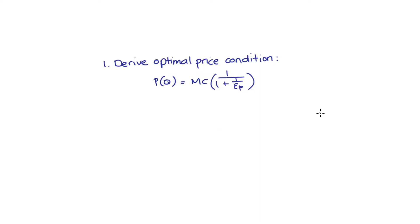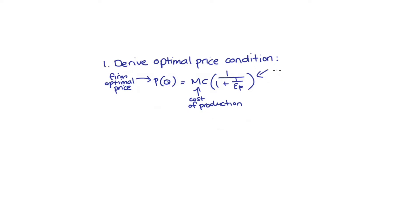P here is the optimal price that the firm sets in order to maximize profit. It's worth saying that this optimal price is a function of the quantity that the firm sets, which is why I have the quantity variable in parentheses after the price variable. MC is marginal cost, or the cost of production per unit. The term in parentheses will be the factor that multiplies our marginal cost to get the optimal price. If this factor is anything larger than 1, this indicates a markup of price over the cost of production.